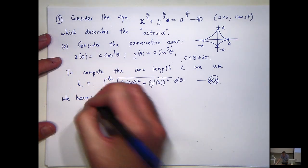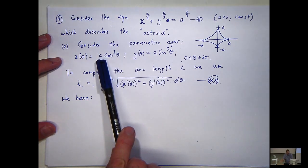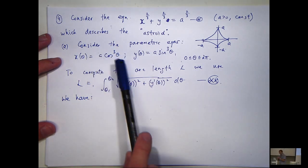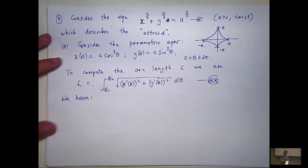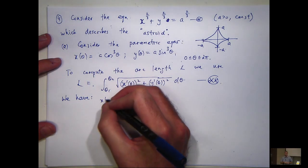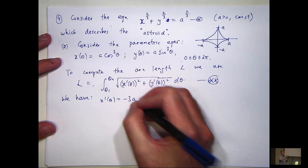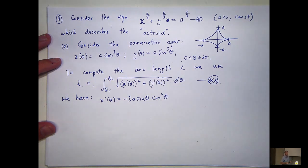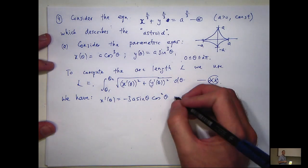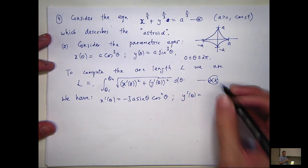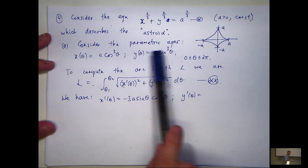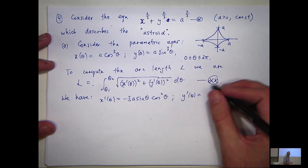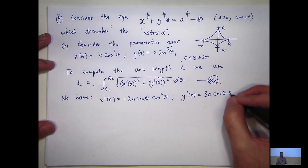So to differentiate this — remember A is a constant here — you bring the 3 to the front, bring the derivative of cos to the front, and change the 3 to a 2. So it's going to be something like minus 3a sin theta cos squared theta. And y prime of theta: bring the 3 to the front, bring the derivative of sin to the front, and decrease the power by 1. So that's going to be 3a cos theta sin squared theta.